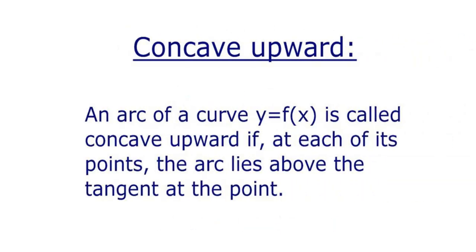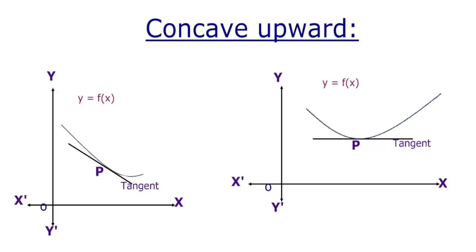Let us see what concave upward means. An arc of a curve y = f(x) is called concave upward if at each of its points the arc lies above the tangent at the point. Observe in the figure that the arc of the curve lies completely above the tangent in both cases. Such a curve is called concave upward.